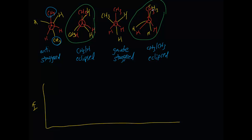The fact that the methyl-methyl eclipsed has the two largest groups — rather than just hydrogens as in the methyl-hydrogen case — means the two largest methyl groups are closest to each other, so this conformation is going to contain the highest energy.